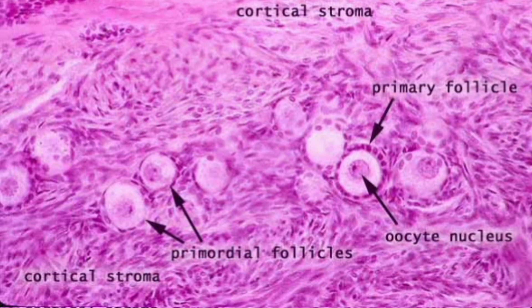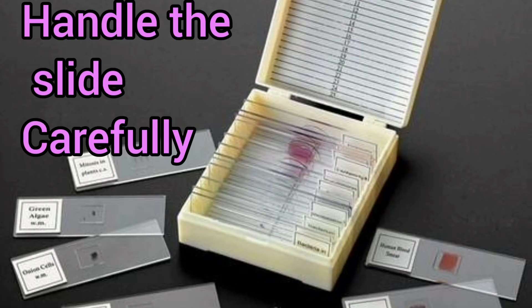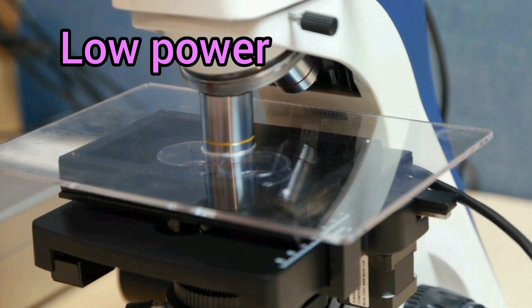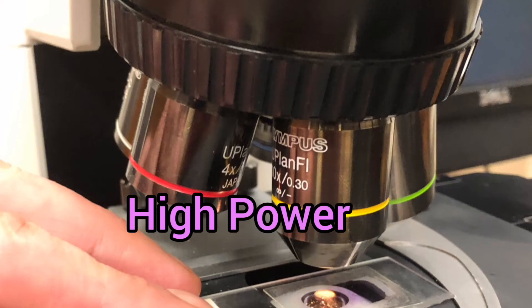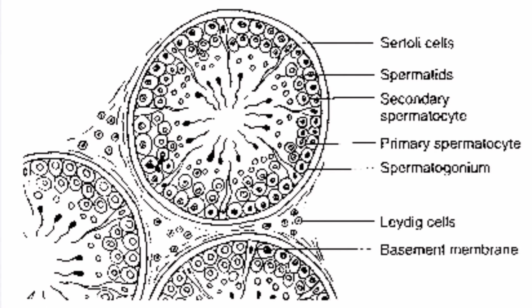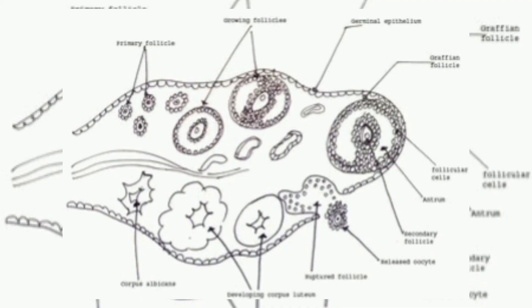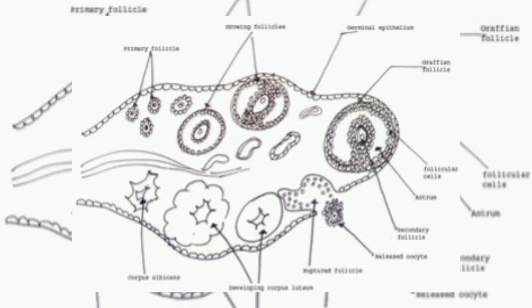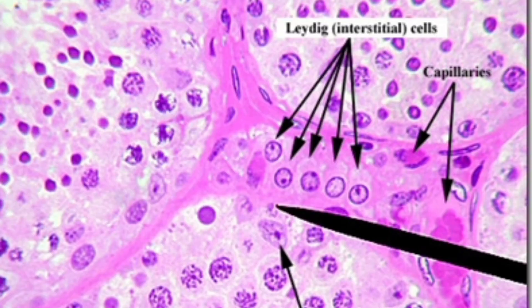Precautions for this activity: the prepared permanent slide should be handled carefully. It should be observed initially under low power and then high power magnification of the microscope. The diagram of the TS of testis and ovary should be drawn and labeled properly in order to understand the detailed structures.